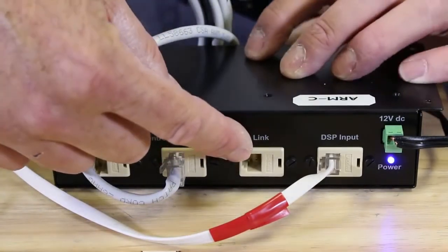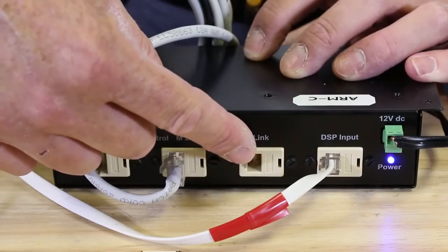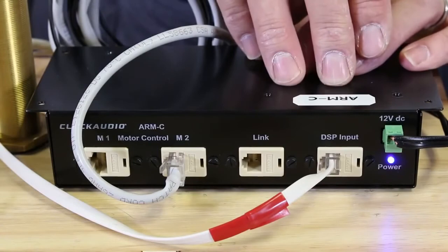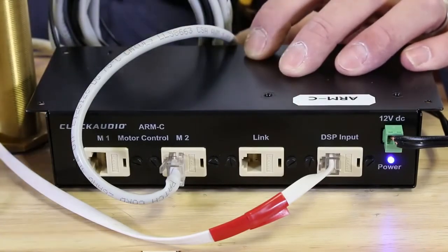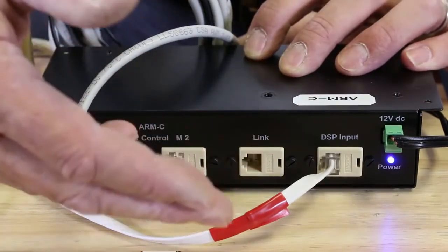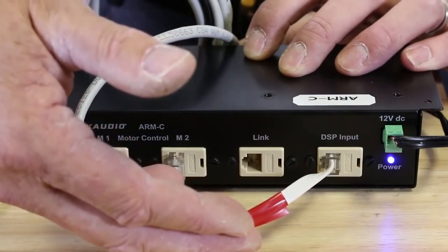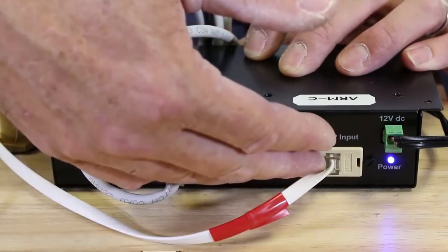There is also a link connector, and this is very important. If I have more than four microphones, if I have multiple ARM-Cs connected down a table, I can link them together, and I only need one two-wire connection back to my DSP logic box.